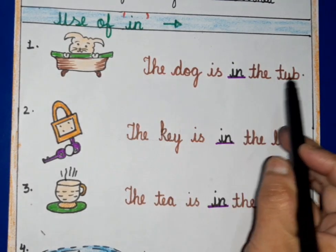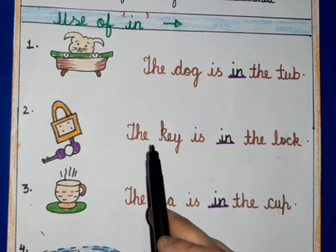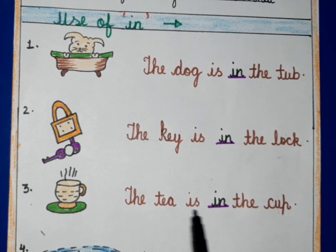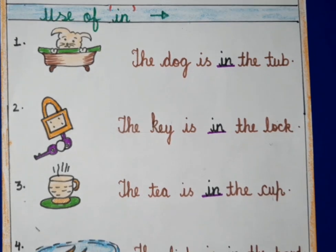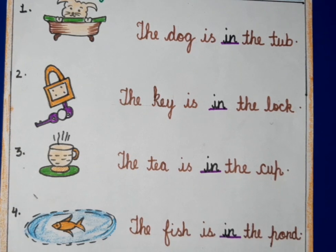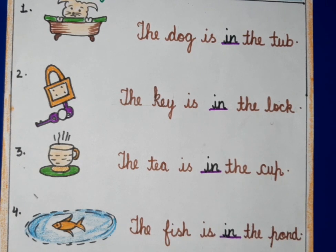So we will repeat it again: The dog is in the tub. The key is in the lock. The tea is in the cup. And the fish is in the pond. I hope kids, use of 'in' is clear to you. We will soon meet with new topics. Stay safe, stay healthy and do practice it at your home.